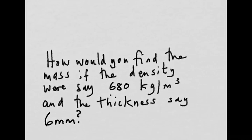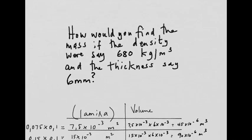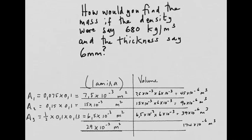Now for interest sake let's see how we could work out the mass of this lamina. So here's the question: how would you find the mass if the density were say 680 kilograms per cubic meter? Now incidentally that is a valid figure for plywood. If you go onto Google and you see the density of plywood you probably get a figure about there. So let's use that and see how we go. And the thickness you saw with the vernier it measured 6.3 odd millimeters. Let's leave it at 6 millimeters and see what we get.